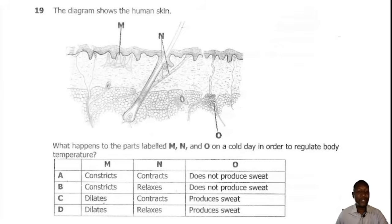Question 19. The diagram shows the human skin labeled M, N and O. What happens to the parts labeled M, N and O on a cold day in order to regulate the body temperature? M are blood vessels and when it's cold, the blood vessels are going to constrict and N is the erector pili muscle. So when it's cold, the erector pili muscle will actually contract to make the hair stand upright so as to create an air of insulation to keep the body insulated. Then O is the sweat gland and the sweat glands do not produce sweat when it's cold. So the correct answer is A.